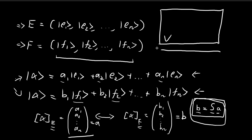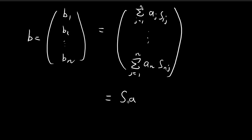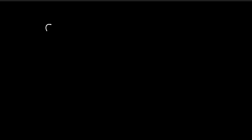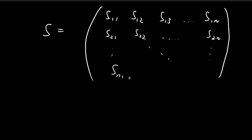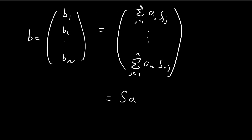So B = S times A gives us our relationship. Analyzing the matrix S, it has entries S_11, S_12, S_13, ..., S_1N in the first row; S_21, S_22, ..., S_2N in the second row; and so on down to S_N1, S_N2, ..., S_NN in the last row — where the first index is the row and the second is the column. This is what your transition matrix S looks like, and it relates the coordinate vectors B and A across the two bases.